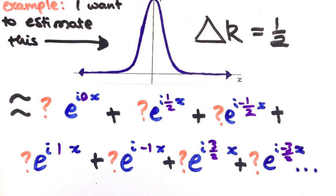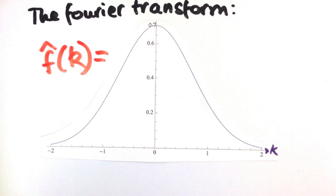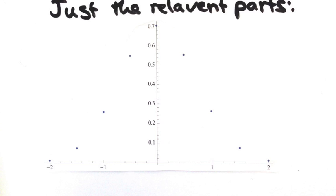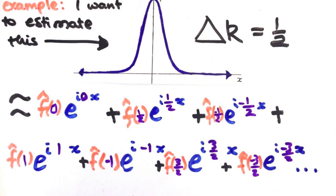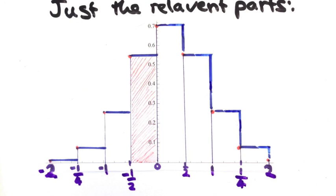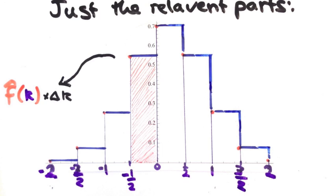Okay, suppose we know the Fourier transform of our function already. We're going to restrict our attention to the points on the graph where k is a multiple of a half. It's tempting to think that the weights to put in front of each of the exponentials should just be given by the value of the Fourier transform at that k, but that's not quite right. Actually, the appropriate weight is the area of each of these sections. In other words, the Fourier transform multiplied by half.